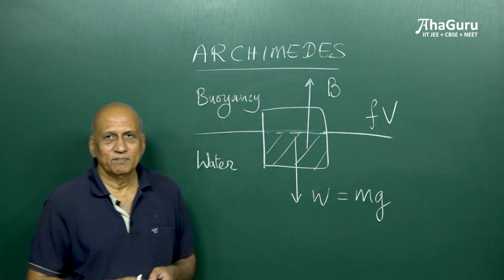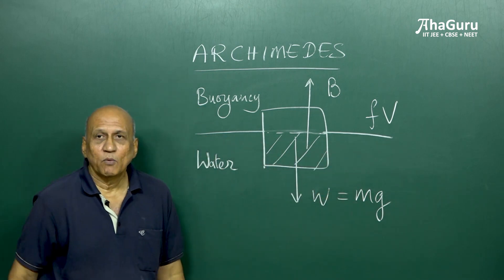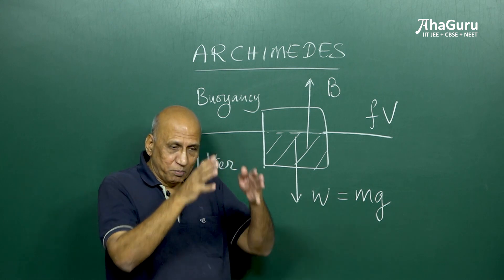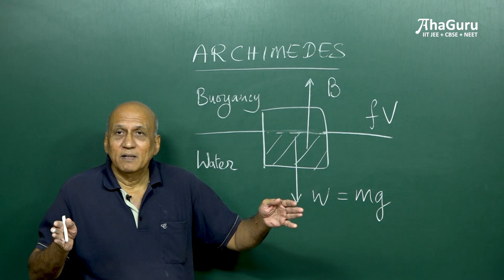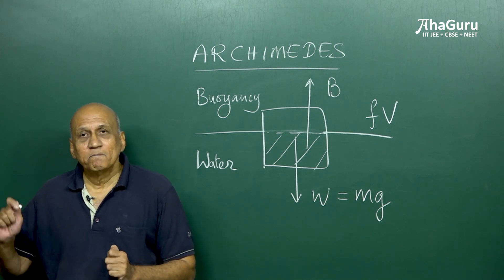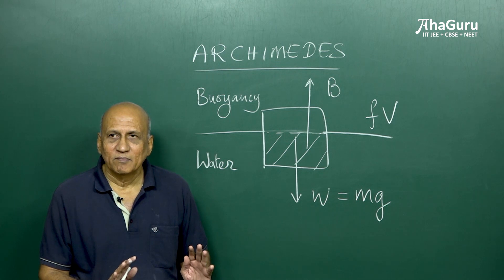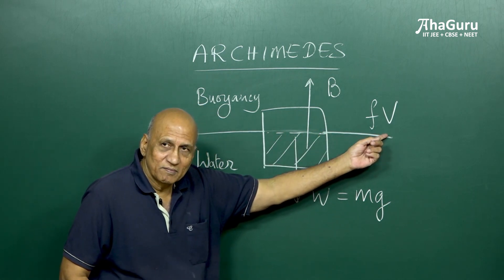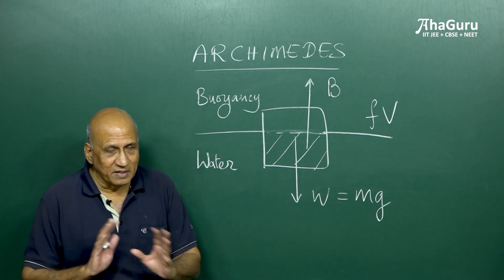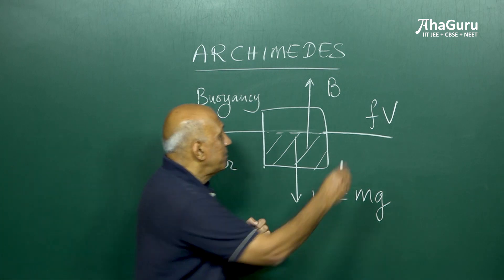F is the fraction of the volume that is submerged, and F times V is the amount of liquid that has been displaced. When the solid was not there, this volume F times V was occupied by the fluid. By putting the solid there, that volume of liquid is displaced. Archimedes used the expression 'liquid displaced' or 'fluid displaced.' It is the fraction of the volume that is submerged. The mass of this displaced water equals F times V multiplied by the density of water.